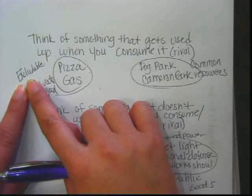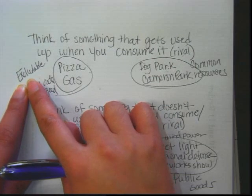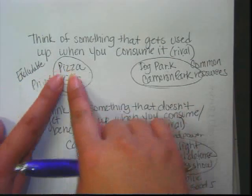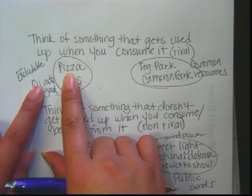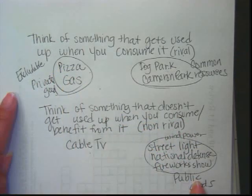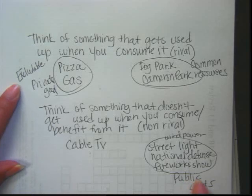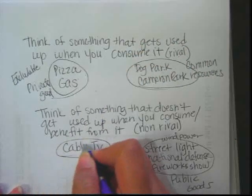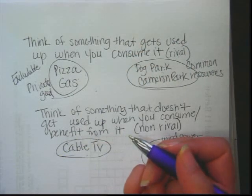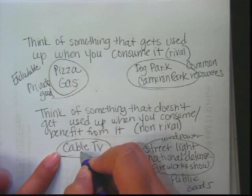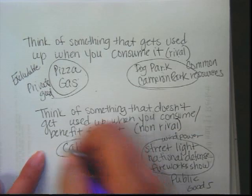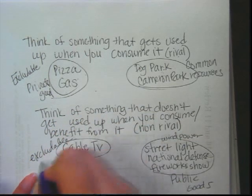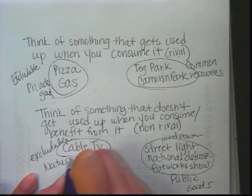Companies like products they can exclude non-payers from — they'll sell it to you and you have to pay every time. That's why we can leave private goods up to the market to produce rather than the government. Now think about cable TV: do you have to pay for it? Yes, so it's excludable. And it doesn't get used up — so this is called a natural monopoly.